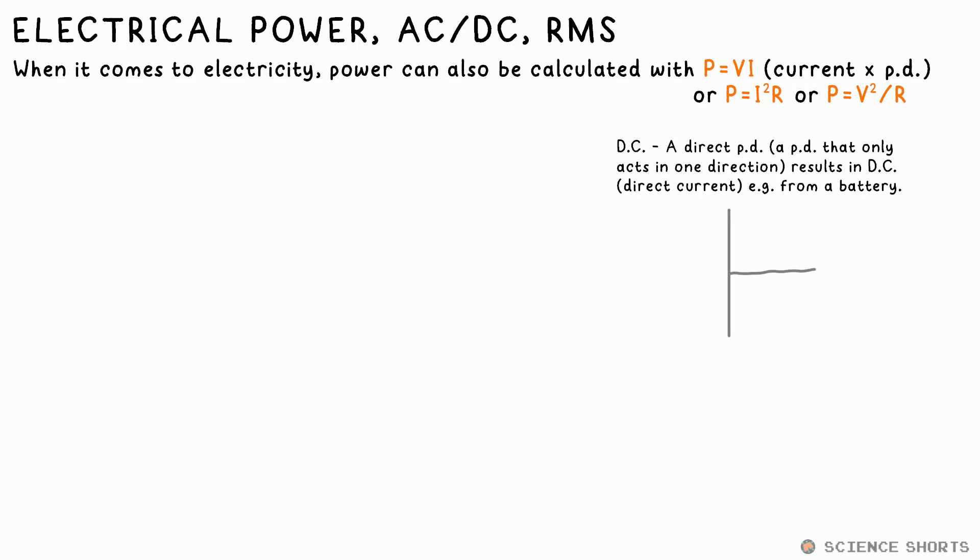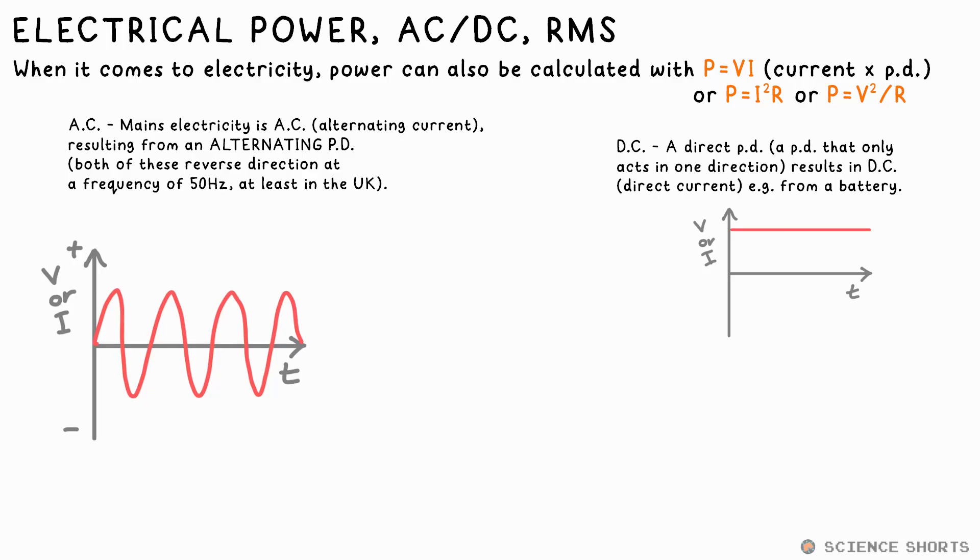A battery or cell produces DC, direct current, the PD, and therefore current, only ever point in one direction. Electronics need DC to work, generally. However, AC, alternating current, is needed to transmit electricity over long distances, say, through the national grid.